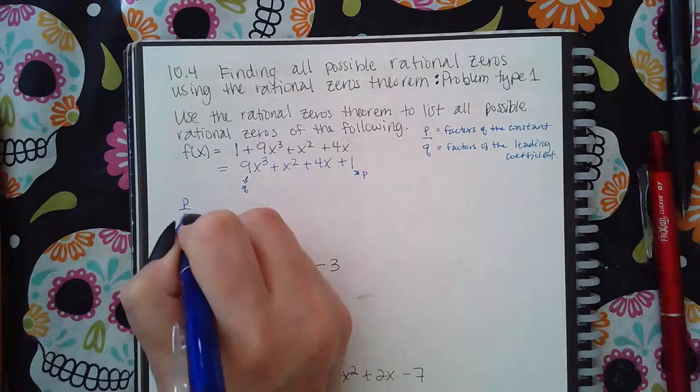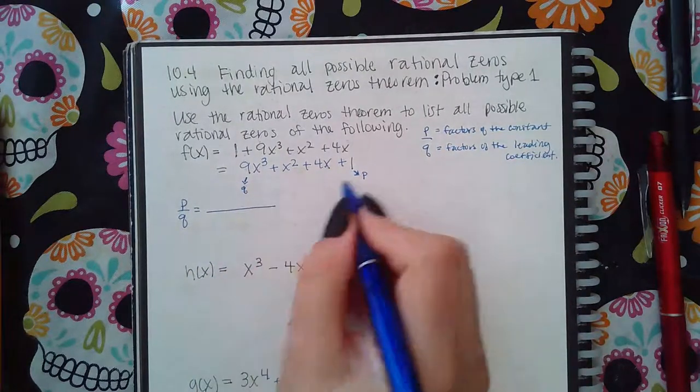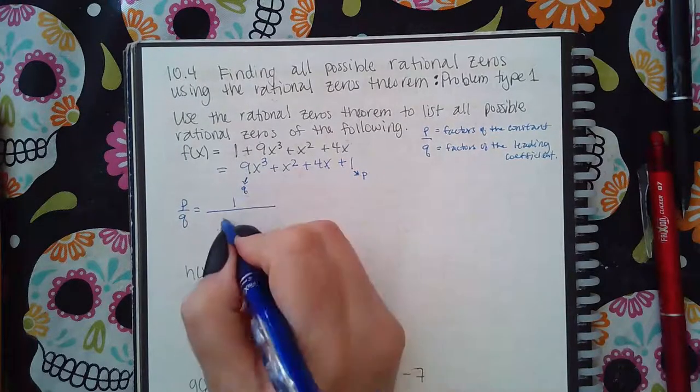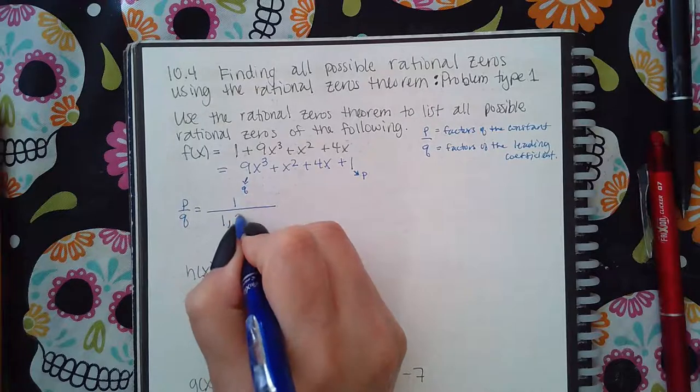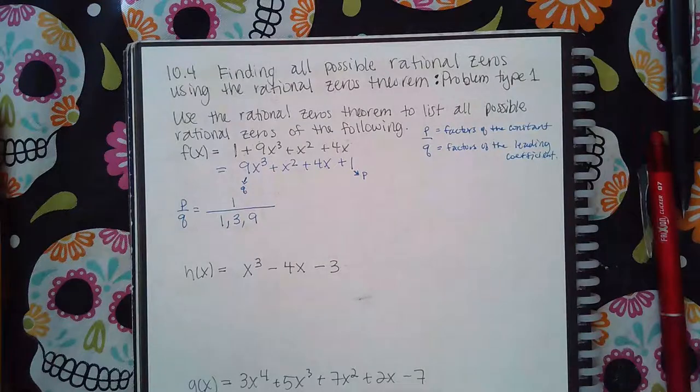So when I do P over Q, it's going to be, well, the only factors of 1 is 1. However, the factors of 9 are 1, 3, and 9. I need to find all the factors of 9.